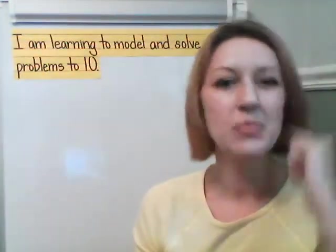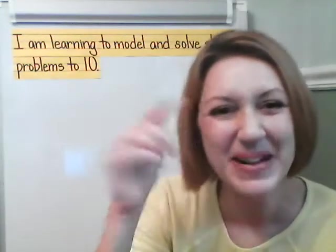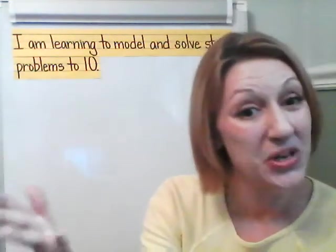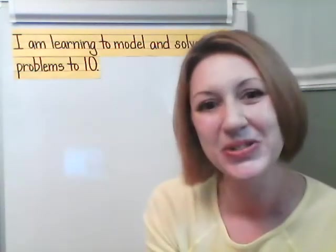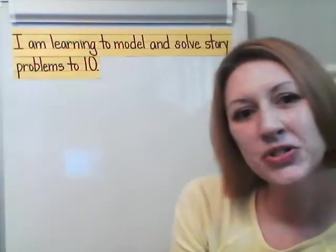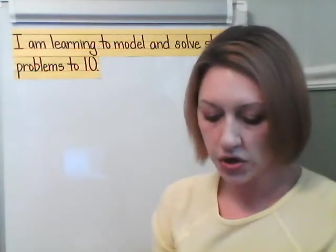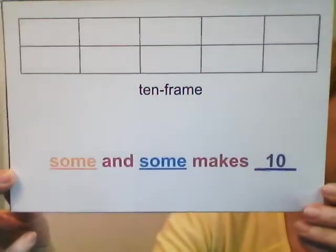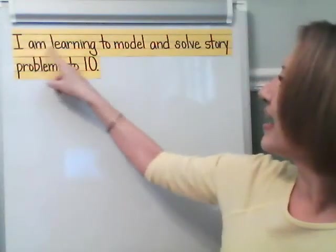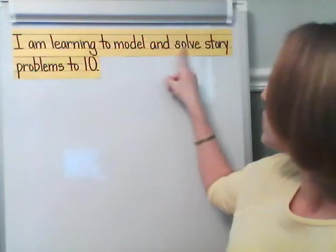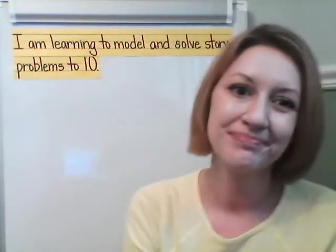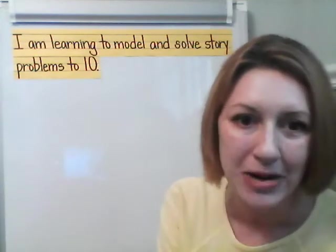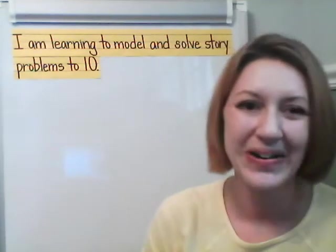I wonder if there's one more combination. Did anybody think of five and five? Five orange fish and five blue fish? I thought of that also. Boys and girls, we used a ten-frame to help us today with modeling. We also used the sentence stem: some and some makes 10. Using a ten-frame can definitely help you out. I am learning to model and solve story problems to 10. We're going to practice some more story problems right now. Nice job!